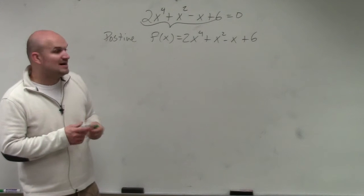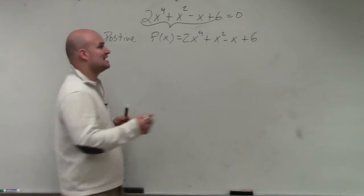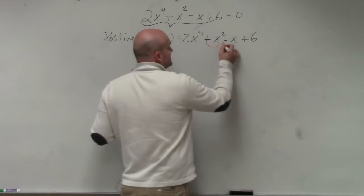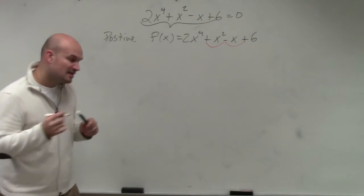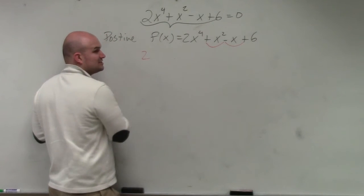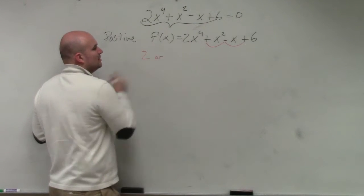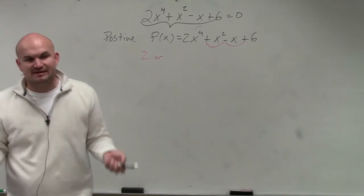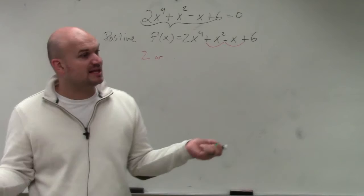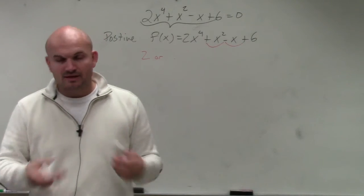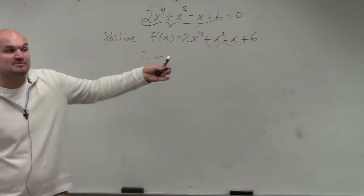So to find the number of positives, all you're doing is finding the number of sign changes. Any time you go from positive to negative, and negative to positive. Then you take the number of sign changes minus an even number. Well, even number, the basic definition of an even number would be a number that's divisible by 2, right? So I always just like to divide by 2 as many times as I can.